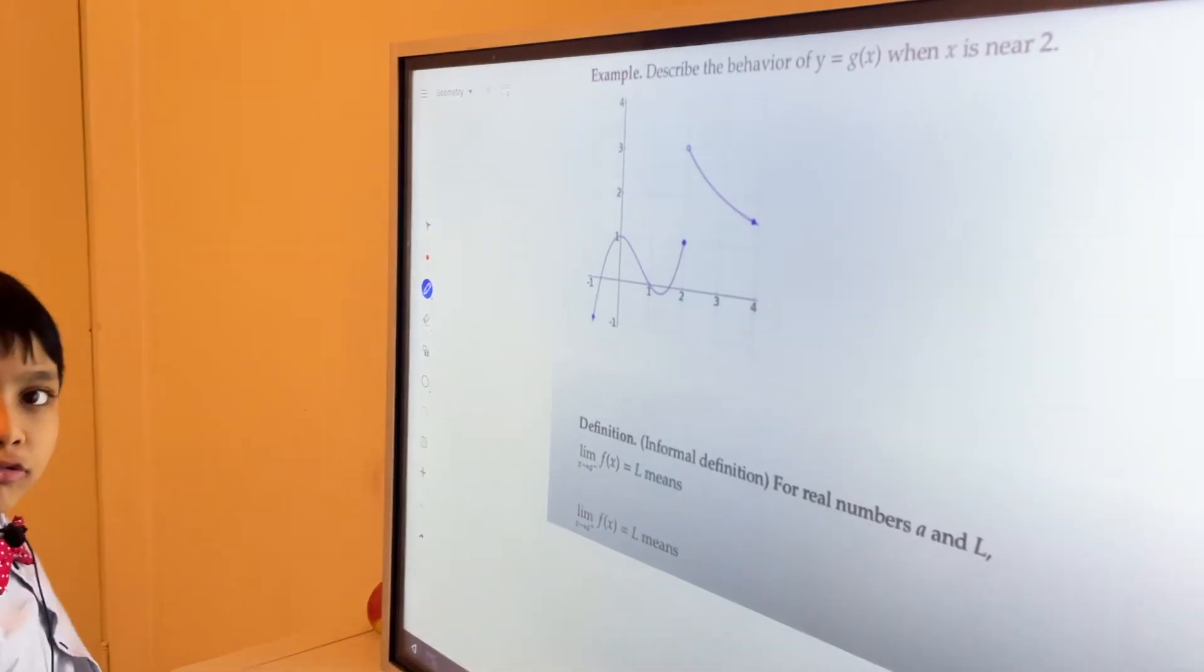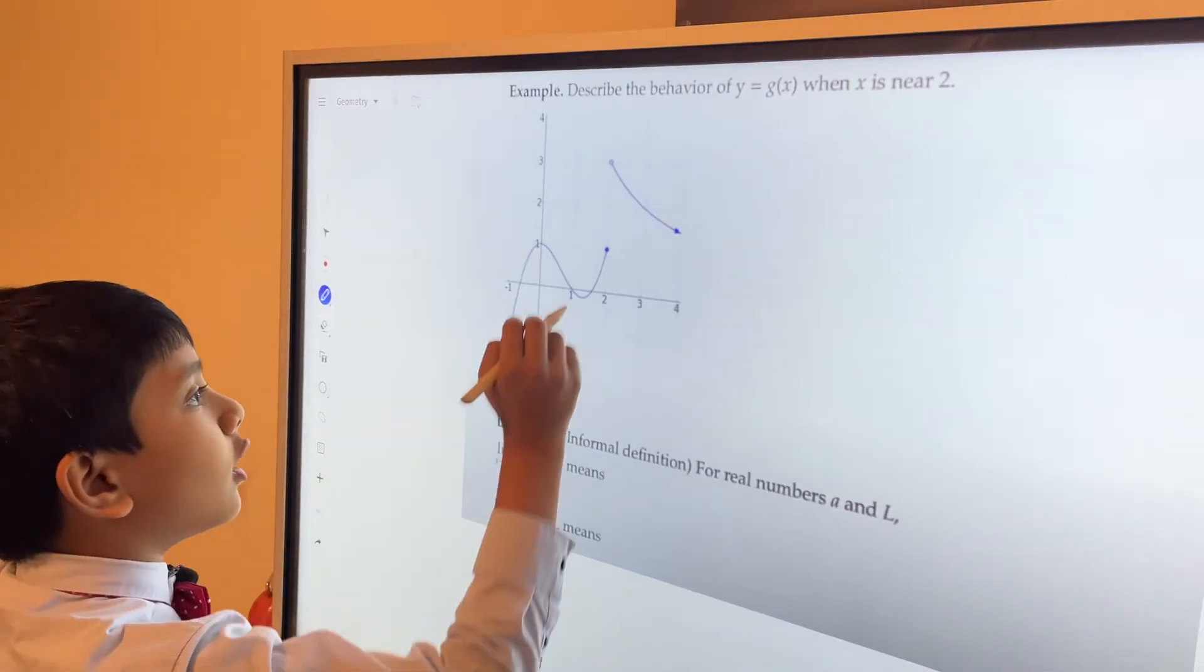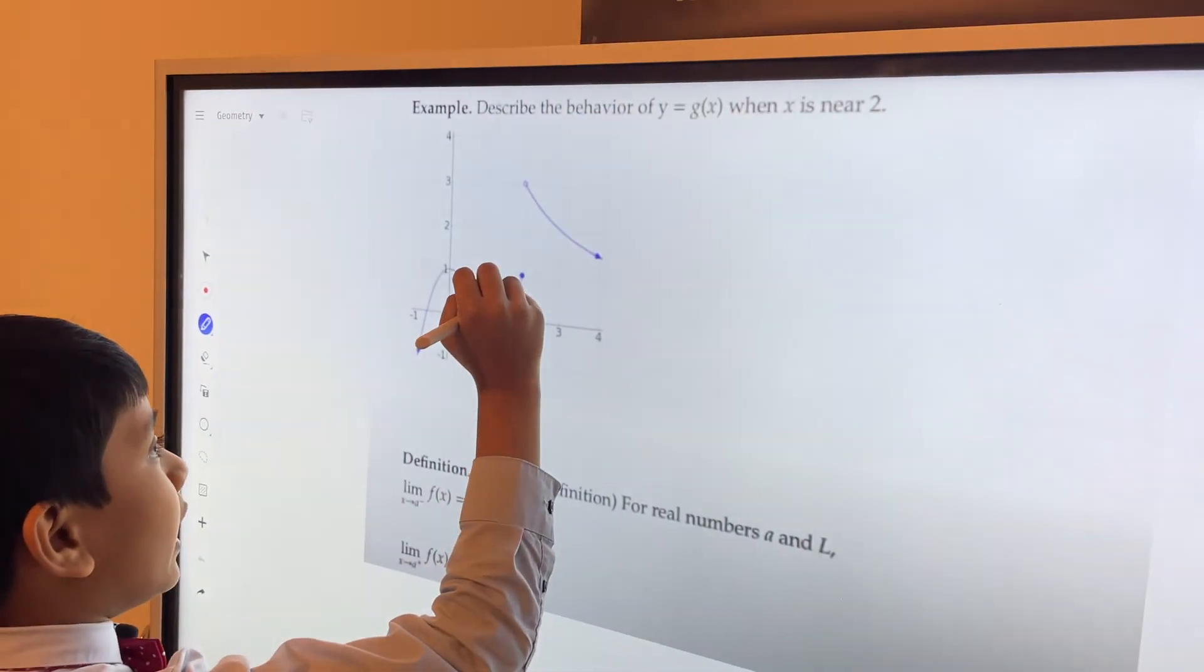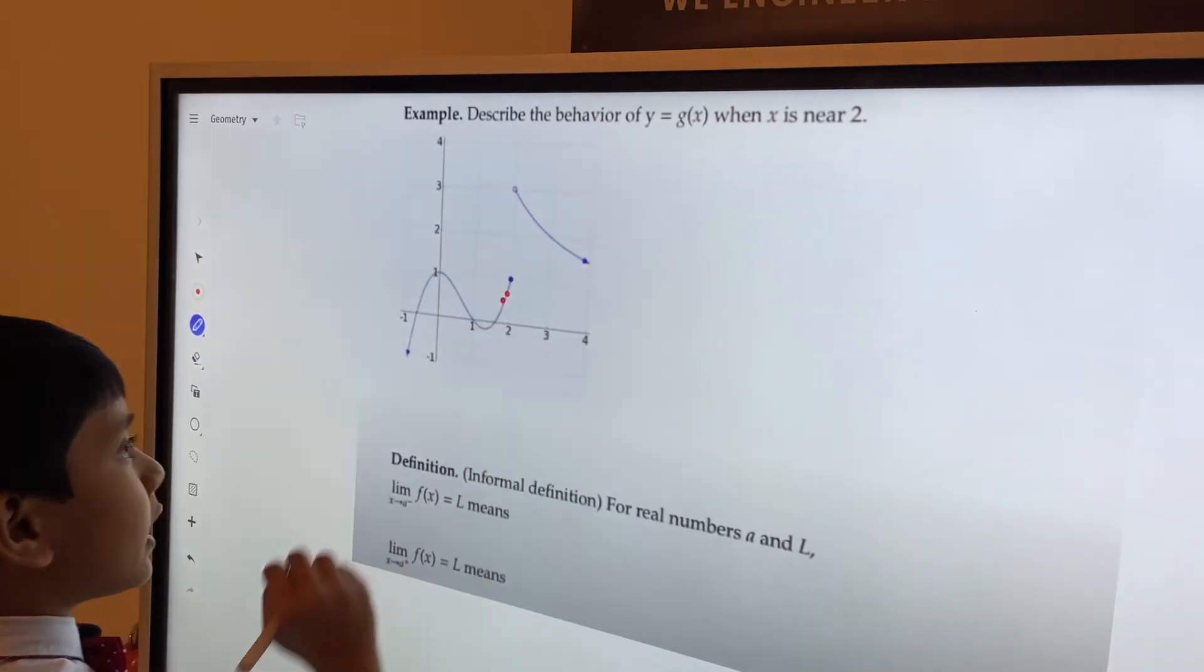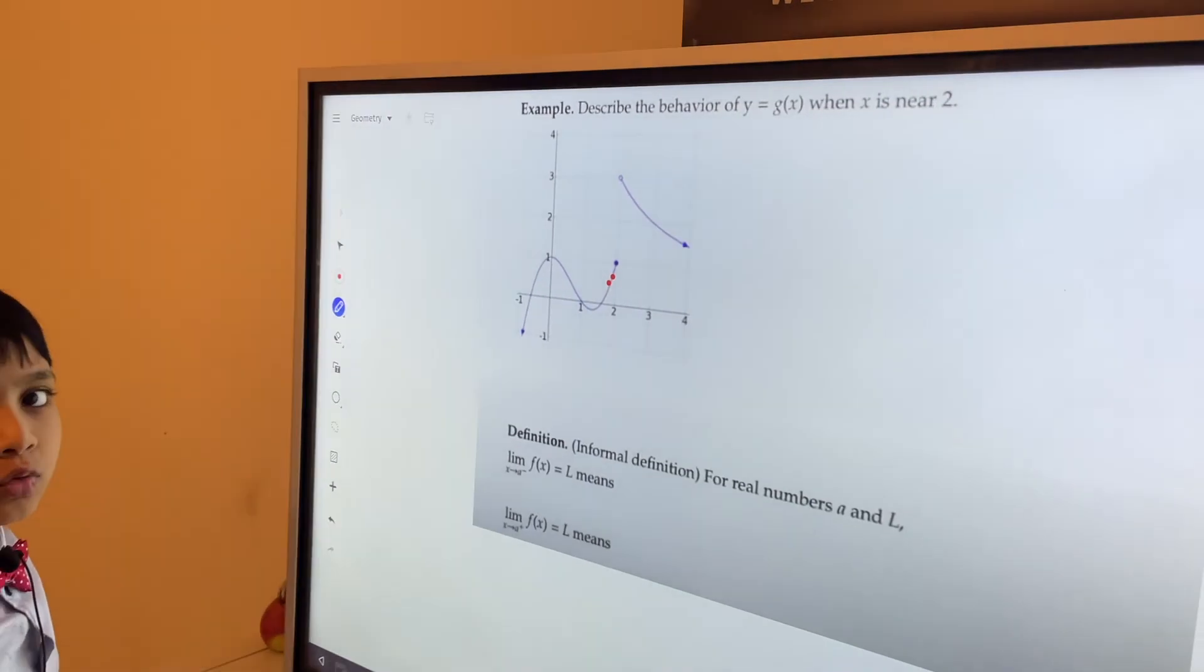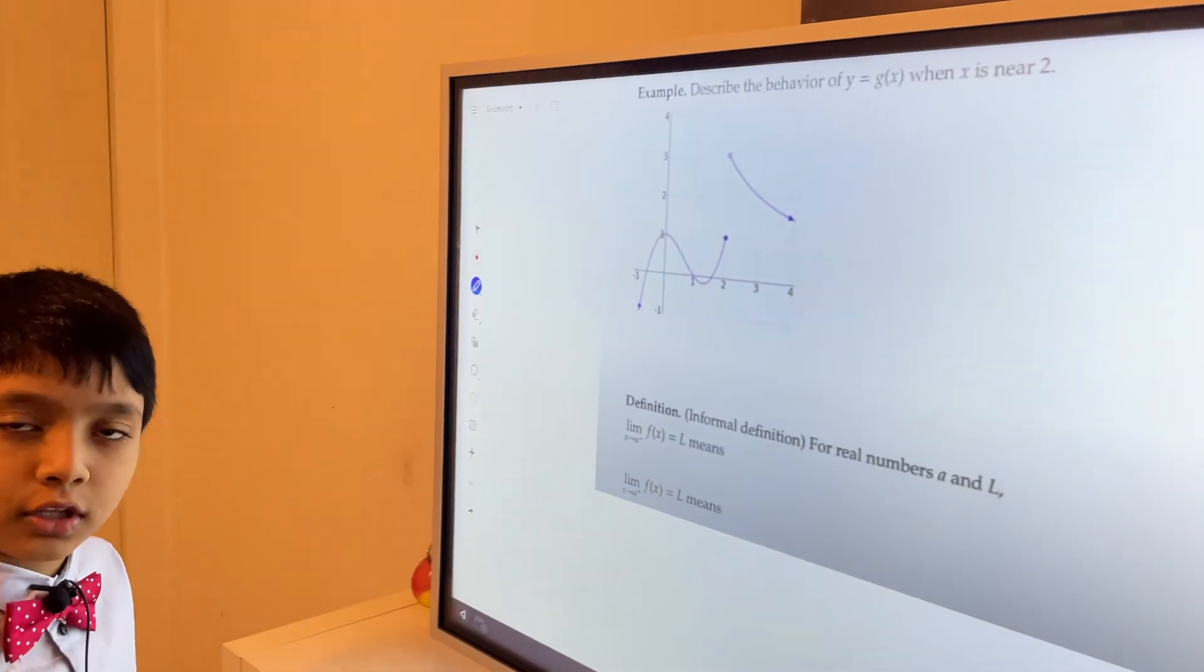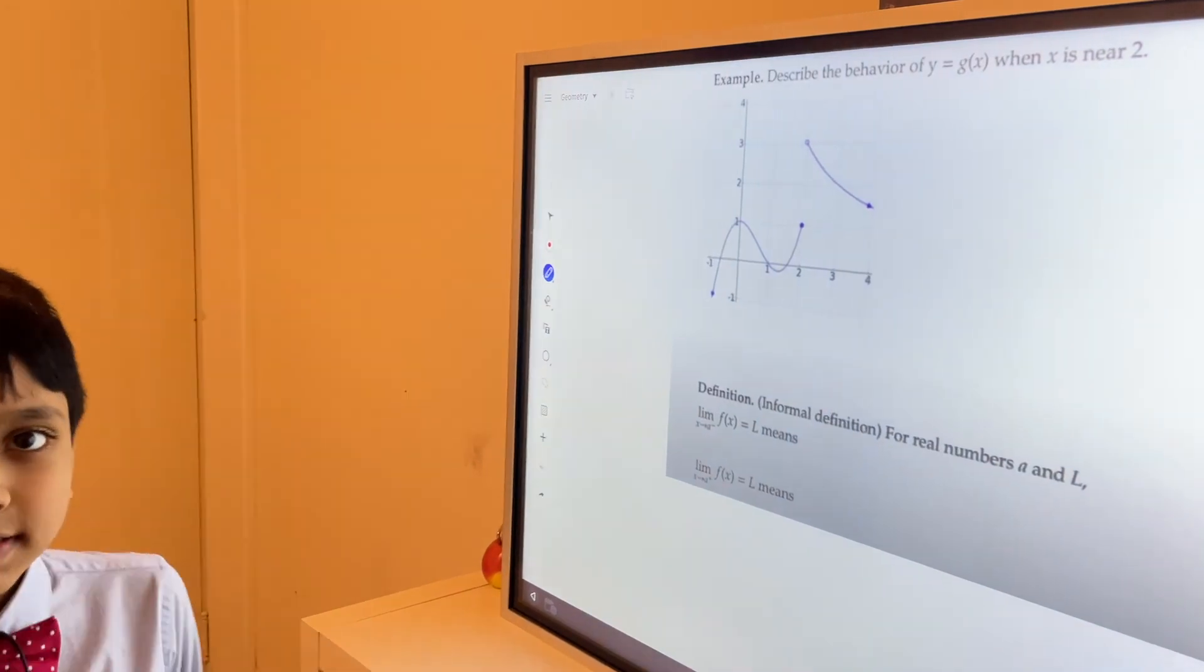So how do we describe the behavior of z of x if x comes closer to 2? To give you a hint, zoom in closer and see what value y or z of x approaches as it gets closer to 2. That's the question of the big idea.